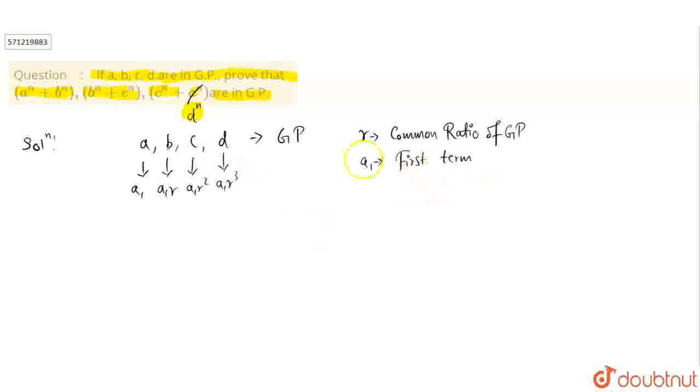Here, we have to prove these three are in GP. A power N plus B power N can be written as A1 power N plus A1 power N R power N. Similarly, B power N plus C power N can be written as A1 power N R power N plus A1 power N R power 2N.